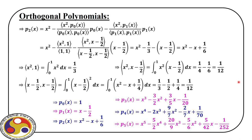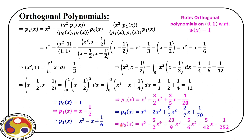In this case our domain was 0 to 1 and weight function w(x) = 1. With that information we have this complete set of polynomials. The advantage of using this is that we can develop all higher terms using information already derived. For P6 we construct the leading term x⁶ plus all other terms, invoke orthogonality one by one, and solve for it.